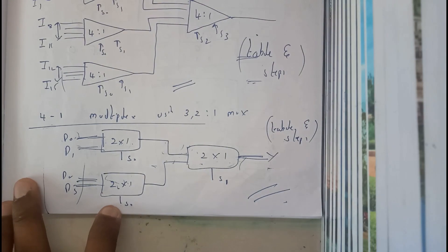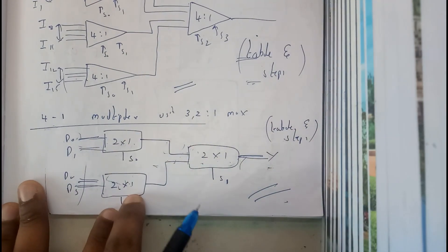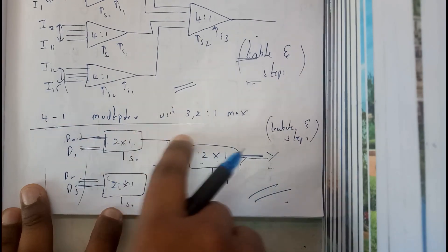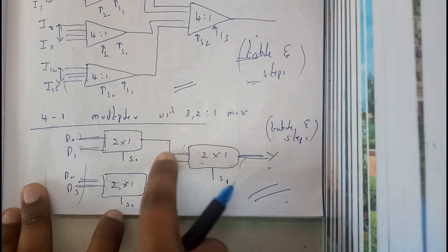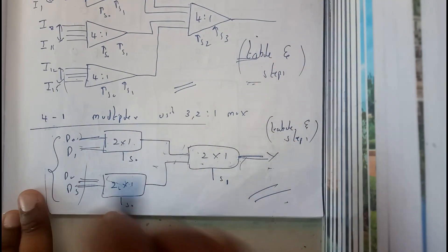We got a single output by drawing this box. This box is nothing but 2-to-1, 2-to-1, 2-to-1. We got 2 inputs 1 output, 2 inputs 1 output, 2 inputs 1 output. At the end, we got 4 inputs on one side and a single output on the other side.